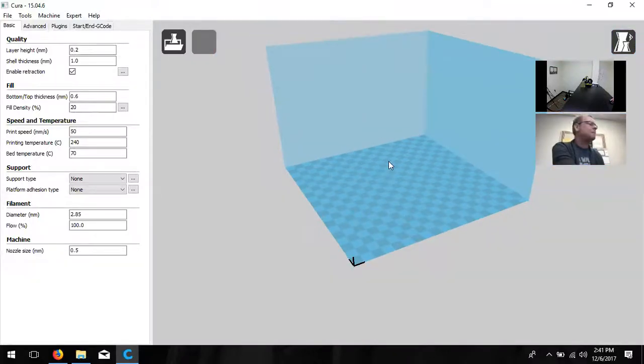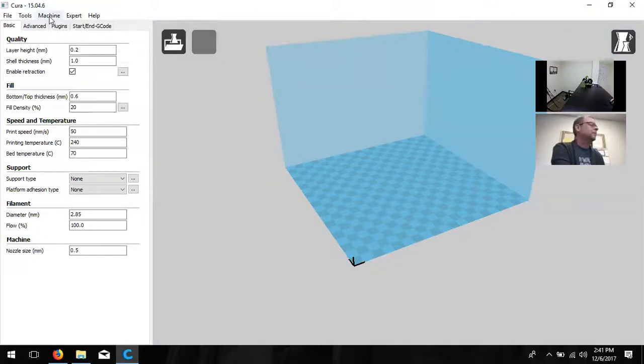This next menu is going to build a box that gives us our build space area. The left-hand side panel is going to be all settings to manipulate our print, and the middle option is going to be where we see our print objects or STL files. Let's go ahead and change the machine settings to match our A5 printer. Click here in the top left-hand corner, click on machine, and then choose machine settings.